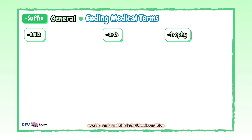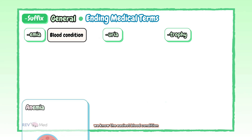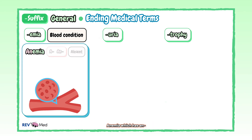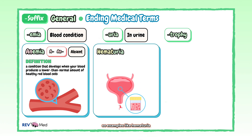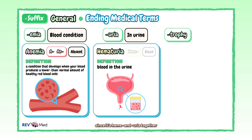Next is "-emia", and this is for blood condition. We know the easiest blood condition — anemia — which has "an", the prefix for without or lacking. This is when we have a problem of lacking enough healthy red blood cells or hemoglobin to carry oxygen. "-Uria" is the suffix for in urine. So hematuria — which you probably figured out means blood in the urine, since it's "heme" and "-uria" together.